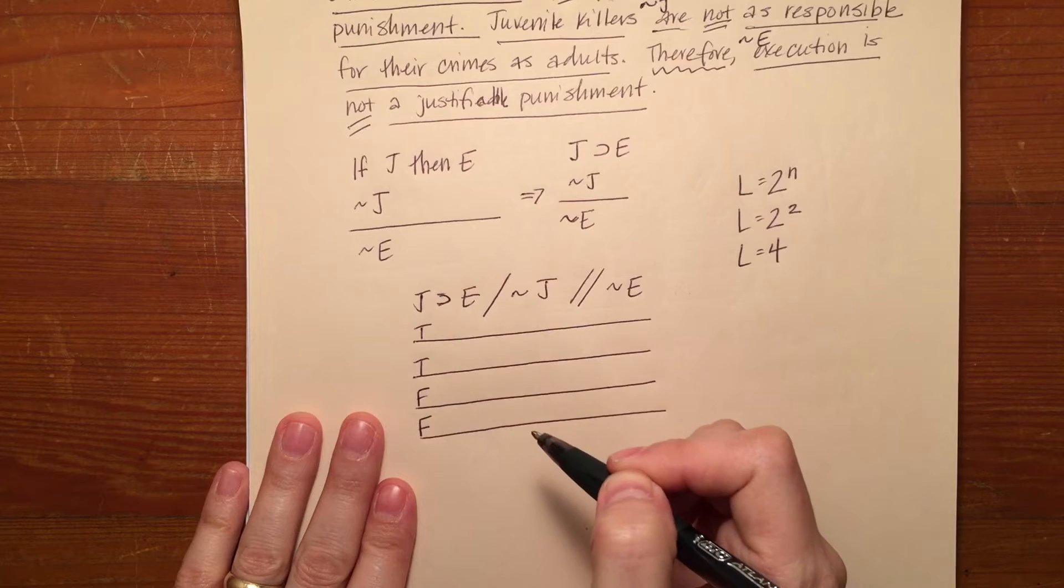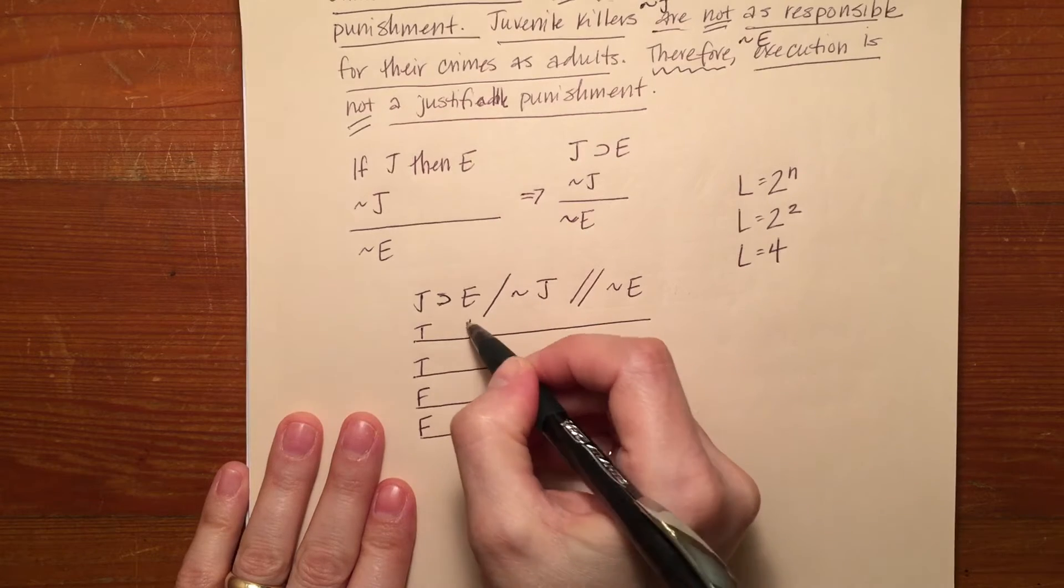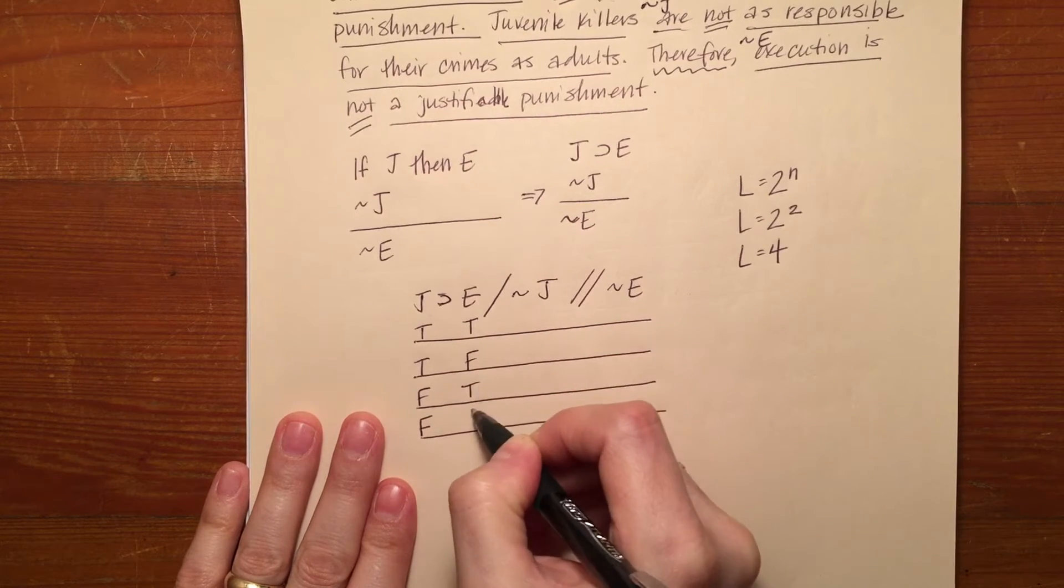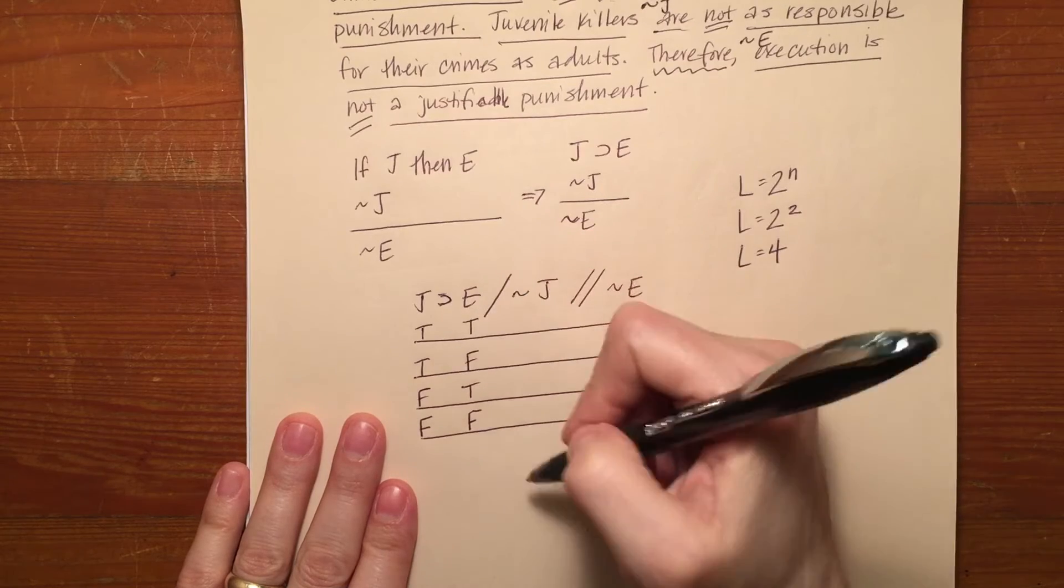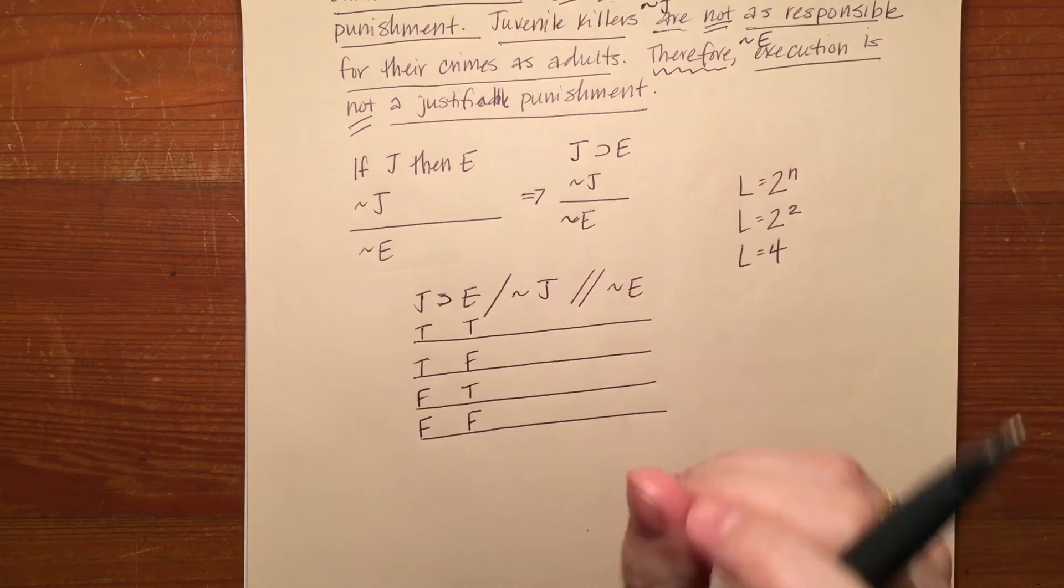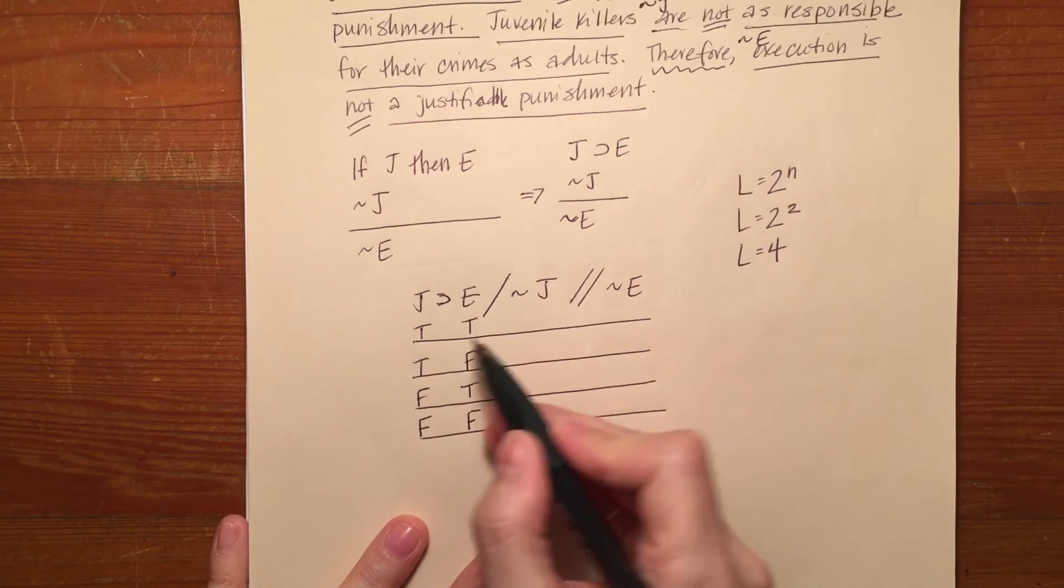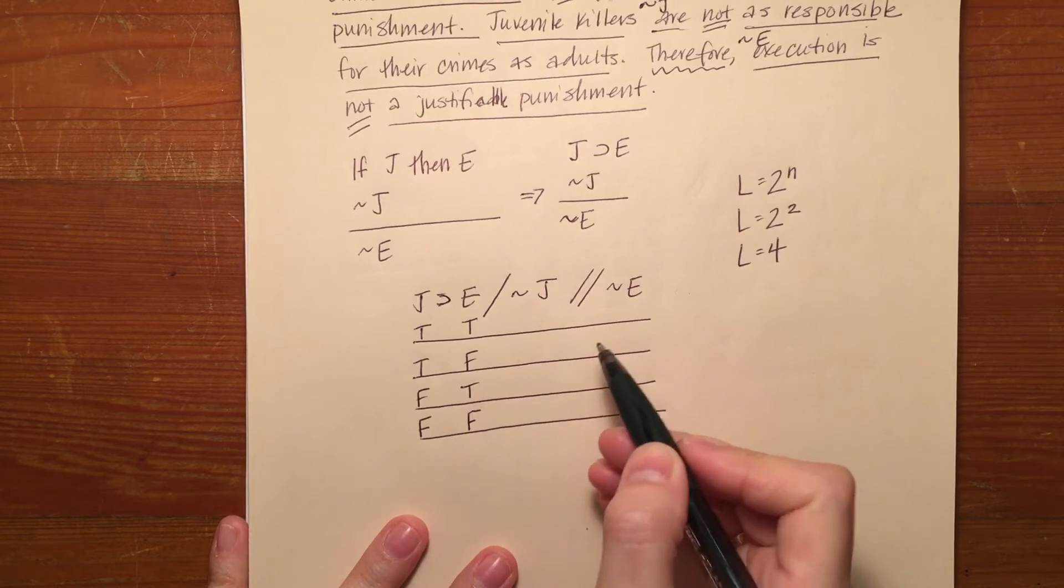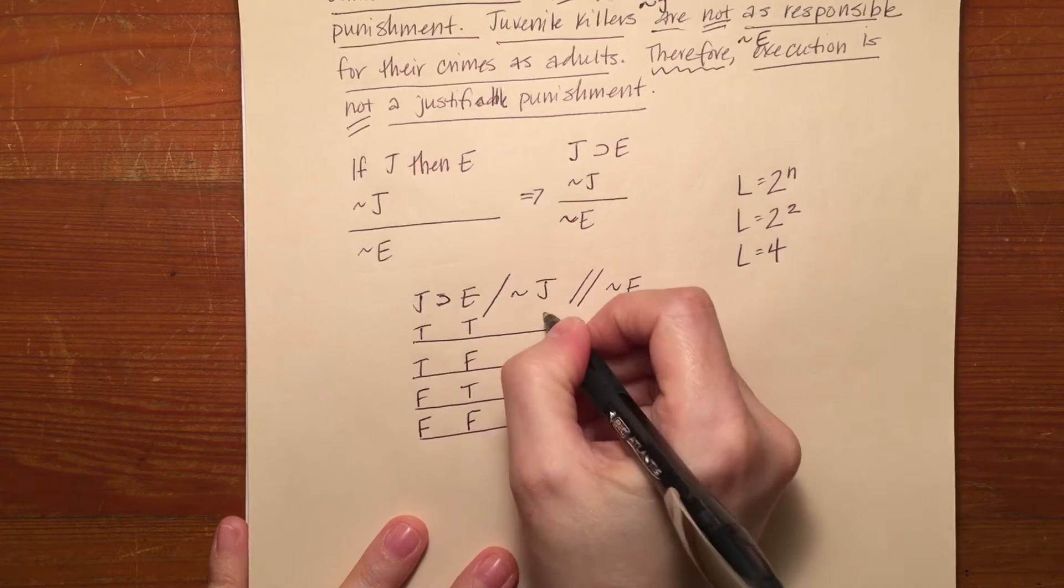I divide that in half again and I get one. One true and one false. All of those rules we've already gone over when it comes to truth tables for longer propositions. Then I can do the same thing that I would normally do. I just carry over those values.